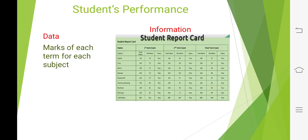Now with the help of some examples we will understand the difference between data and information. If we want to know overall student performance, then the student report card is information for us, and we can only get this information with the help of data — that is, marks of each subject for each term. We enter the marks for English, Hindi, and other subjects for both terms, and then we prepare the student report card, which is more important than the individual marks.